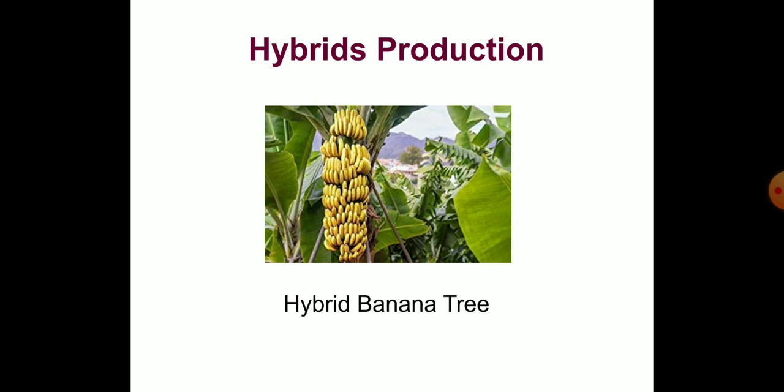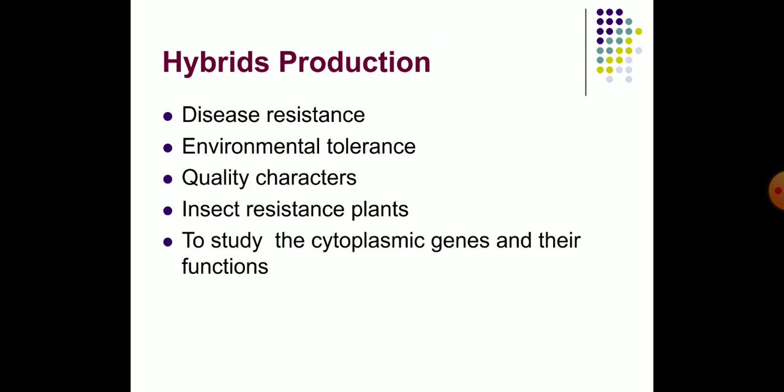Hybrid production: Protoplasts of different species can be fused to generate a hybrid. In vitro fusion of isolated protoplasts forms a hybrid cell, and its subsequent development forms a hybrid plant. Several interspecific and intergeneric hybrids with disease resistance have been created. The genes responsible for tolerance of cold and salt could be successfully introduced through somatic hybridization. Somatic hybrids for the production of high nicotine content have been developed. Somatic hybridization has helped to study cytoplasmic genes and their functions.